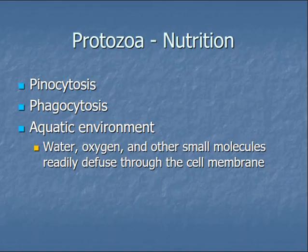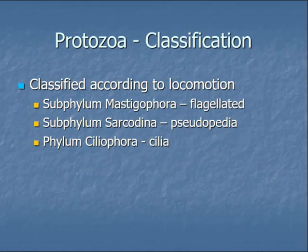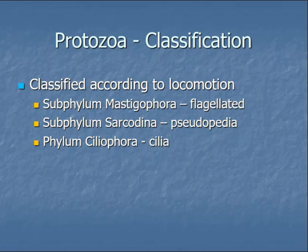Protozoa survive in aquatic environments where oxygen diffuses to the cell membrane — that's how they get their oxygen. They need moisture to survive; you have to be careful not to dry them out. They move by those three different methods, and we'll have subphyla and phyla that are consistent with their locomotion — part of the classification between domains and kingdoms and genus and species. These are categorized by their locomotion.